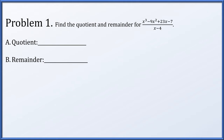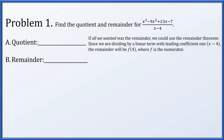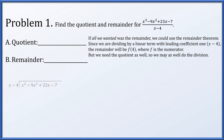Problem 1. We're going to find the quotient and remainder when we do the polynomial division of x cubed minus 9x squared plus 23x minus 7 divided by x minus 4. Now if all we wanted to find was the remainder, we could use the remainder theorem. Since we're dividing by a linear term with leading coefficient 1, specifically 1x minus 4, the remainder will be exactly f of 4, where f is the numerator. But we need the quotient as well, so we may as well go ahead and do the polynomial division.